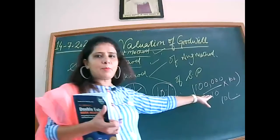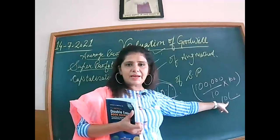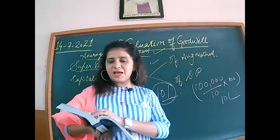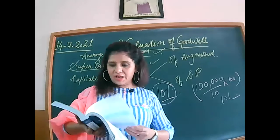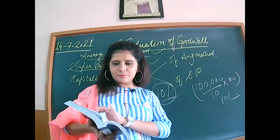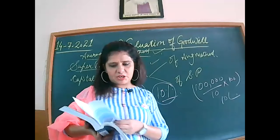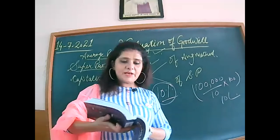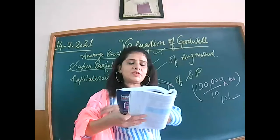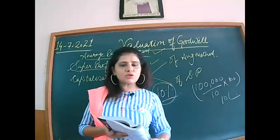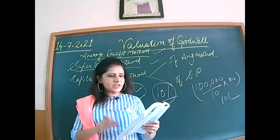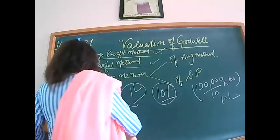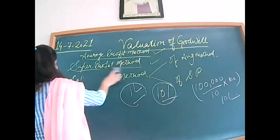L means lakh — keep this in mind. Now let's see what formula has been made and how it proceeds in your book. We have the capitalization method at the last chapter. A few topics of super profit have been left — one was undervaluation of stock and another was overvaluation of stock. I will discuss those first, then proceed with the capitalization method. Illustration number 12 and illustration number 13.